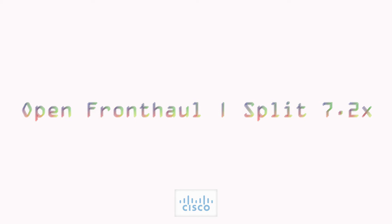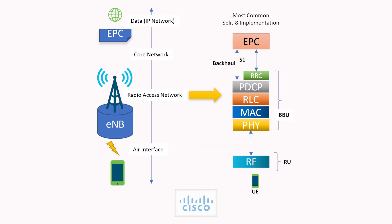The topic for today is Open Fronthaul, or the 7.2x split. If you can recollect the earlier session on functional splits, you'll remember that a split 8 implementation at the radio access network meant that the eNodeB comprised of the radio unit performing the RF functionality and the baseband unit performing the PHY, MAC, RLC, and PDCP functions.